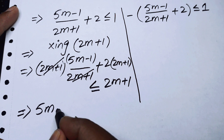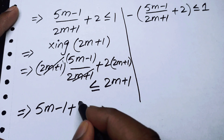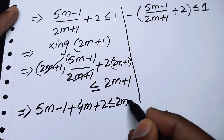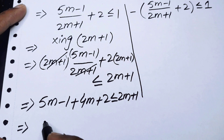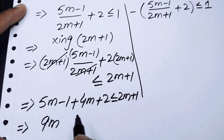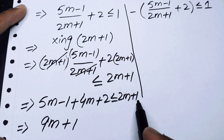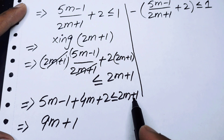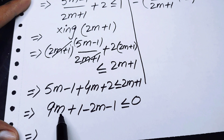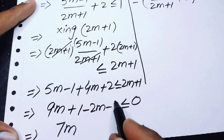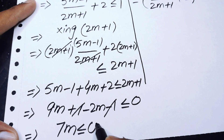After cancellation we get 5m − 1 + 4m + 2 ≤ 2m + 1. Combining like terms: 5m + 4m = 9m and −1 + 2 = +1, giving 9m + 1 ≤ 2m + 1. Taking the right-hand side terms to the left: 9m − 2m ≤ 0, which simplifies to 7m ≤ 0.